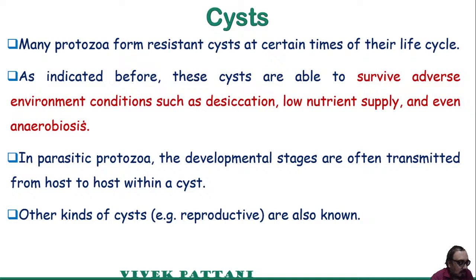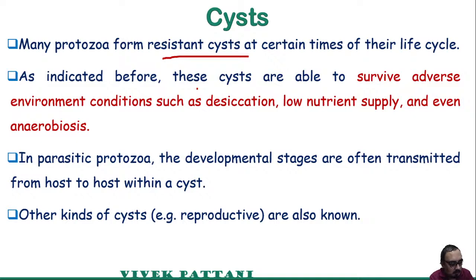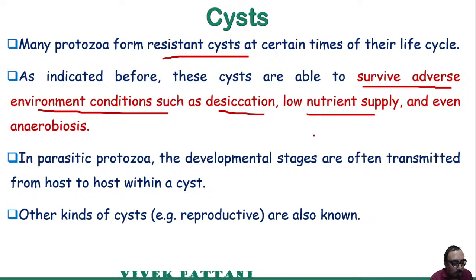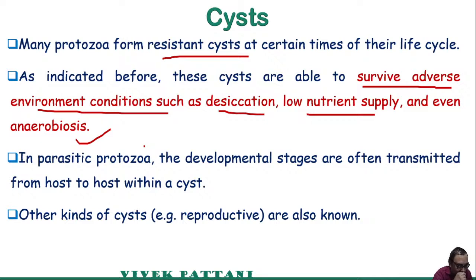Now the cysts: many protozoa form resistant structures at certain times of their life cycle, especially when conditions are not good for their growth. Cysts are able to survive adverse environmental conditions such as desiccation, low nutrient supply, and even anaerobic conditions. This helps the protozoa to survive since all protozoa are basically aerobic organisms.